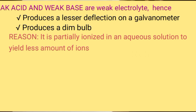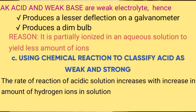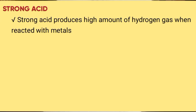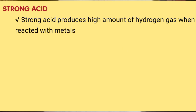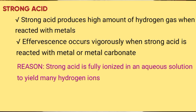Using chemical reaction to classify acids as weak and strong. The rate of reaction of an acidic solution increases with increase in amount of hydrogen ions in solution. Strong acid produces a high amount of hydrogen gas when reacted with a metal, or a high amount of carbon dioxide when reacted with a metal carbonate. The reaction occurs vigorously when a strong acid is reacted with a metal or a metal carbonate, because a strong acid is fully ionized in aqueous solution to yield many hydrogen ions.